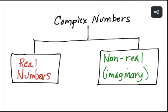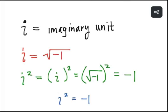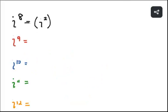Section 1.3: Complex Numbers, Part 1. The complex number system is made up of real numbers and nonreal numbers — we also call nonreal numbers imaginary numbers. The imaginary unit is *i*, usually indicated with a lowercase italics *i*. The value of *i* is the square root of negative 1, so *i* = √(−1), and *i*² = (√(−1))² = −1.